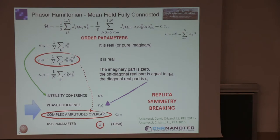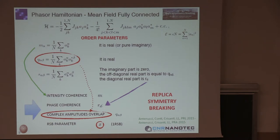There is another order parameter that we call phase coherence — a parameter that is non-zero where you have locking of phases even though your system is still fluid. Things move as in the paramagnetic phase, but the phases are locked with each other.